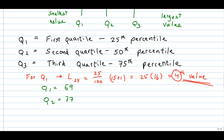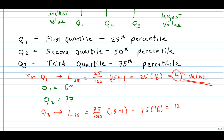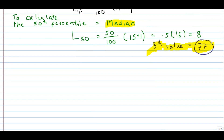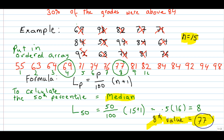Q2 we already calculated as the 50th percentile or the median, and we got 77. Let's calculate Q3. L subscript 75 is equal to 75 over 100 times N plus 1, which is 0.75 times 16, giving us 12. Again, that's not 12, it's the 12th value. Let's scroll back up and see what the 12th value is — and the 12th value is 84. So Q3 equals 84.